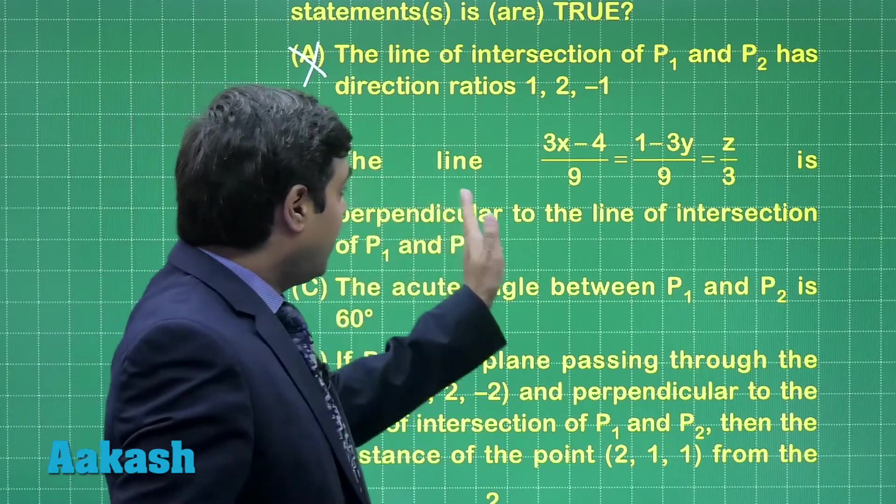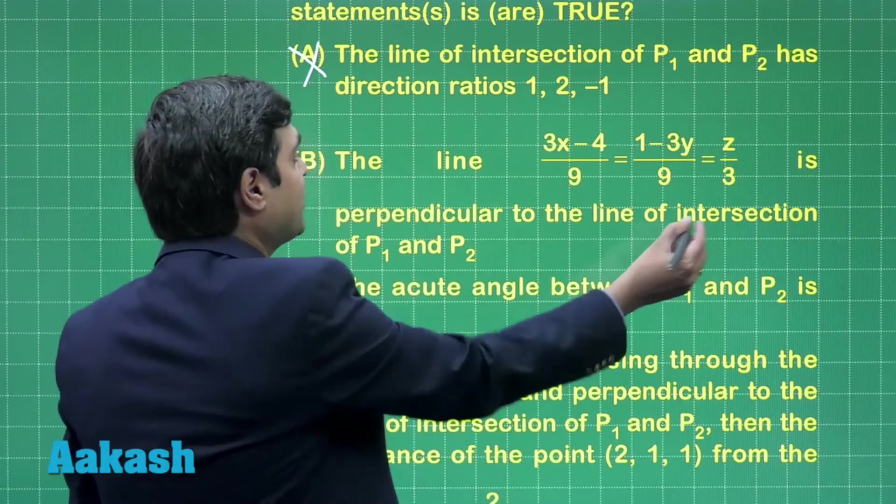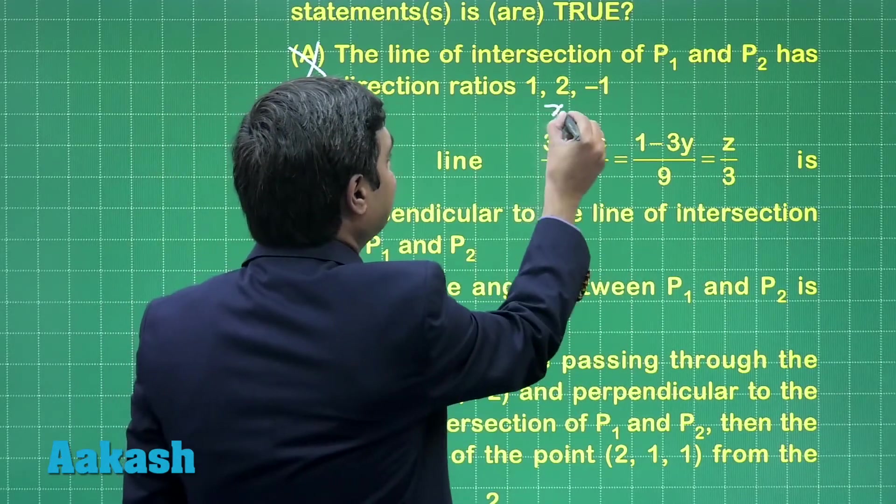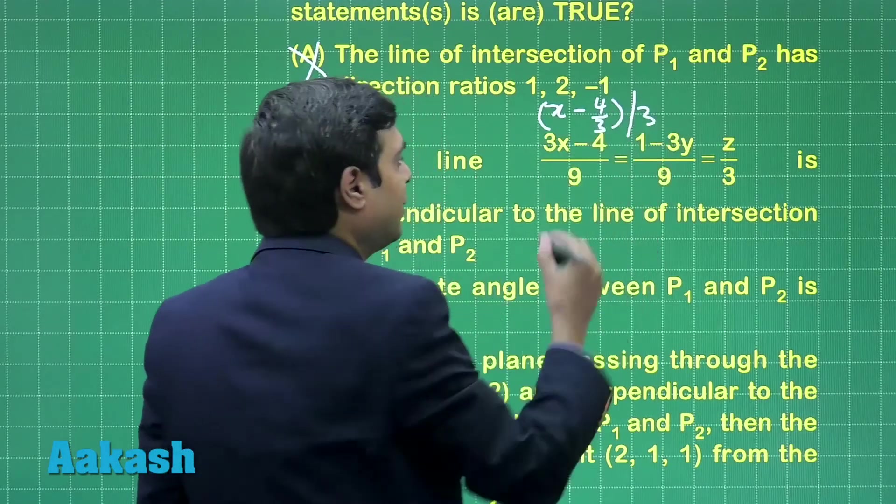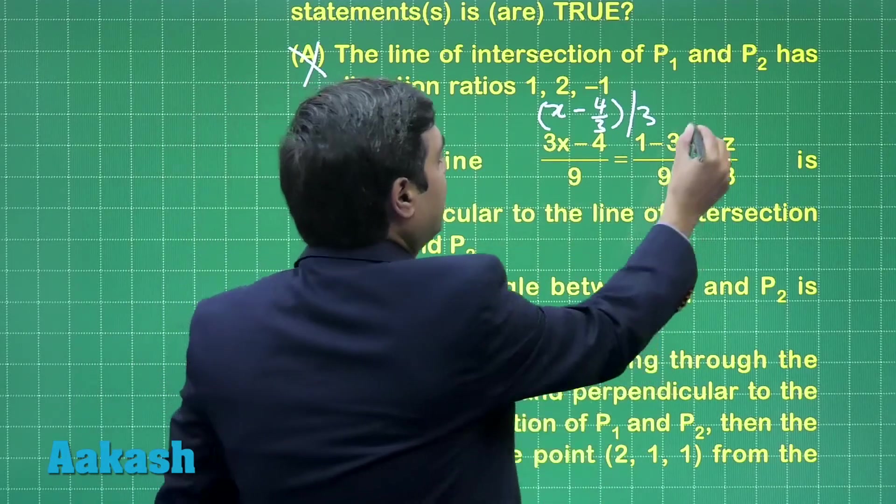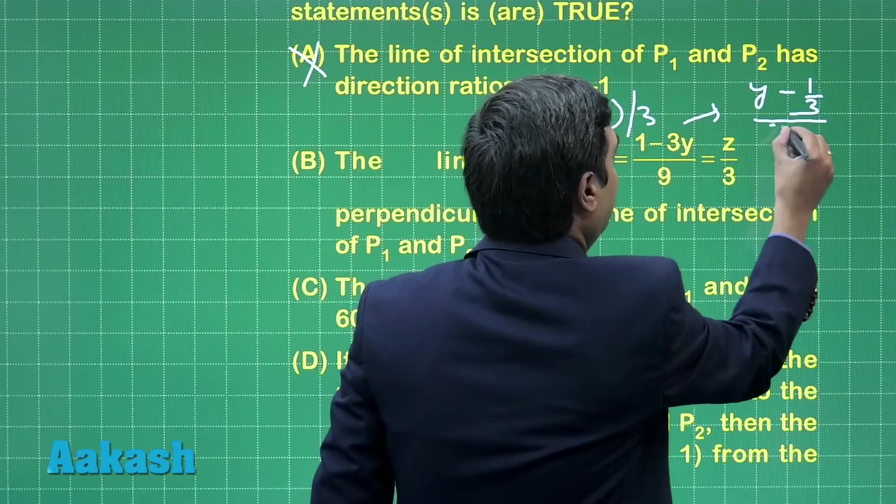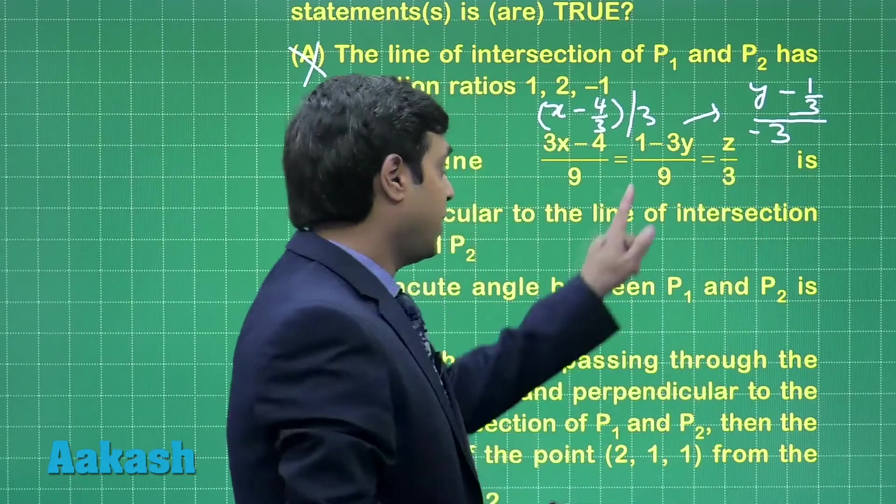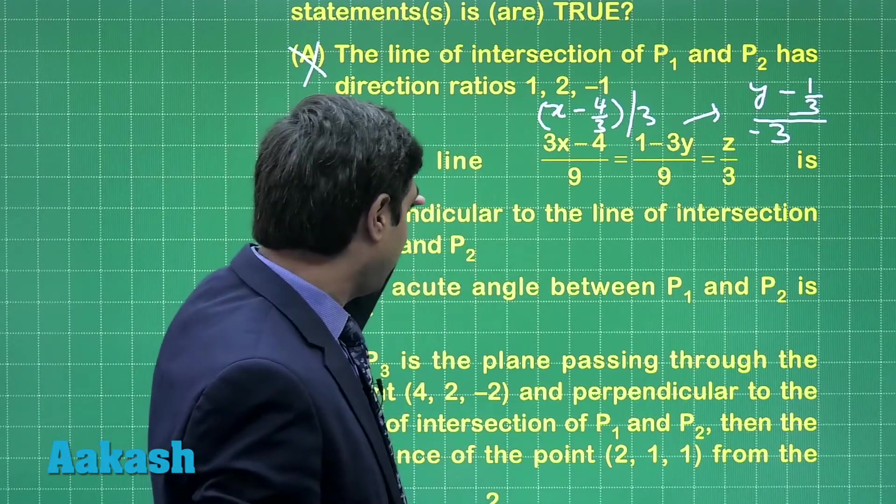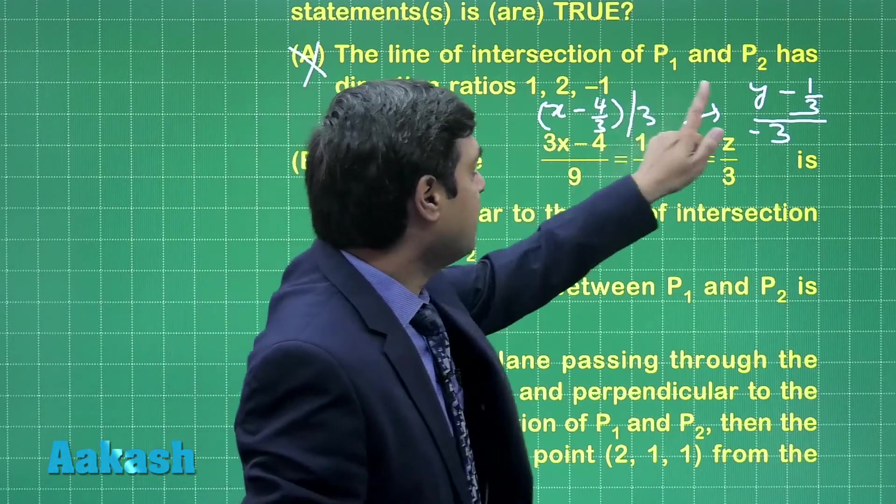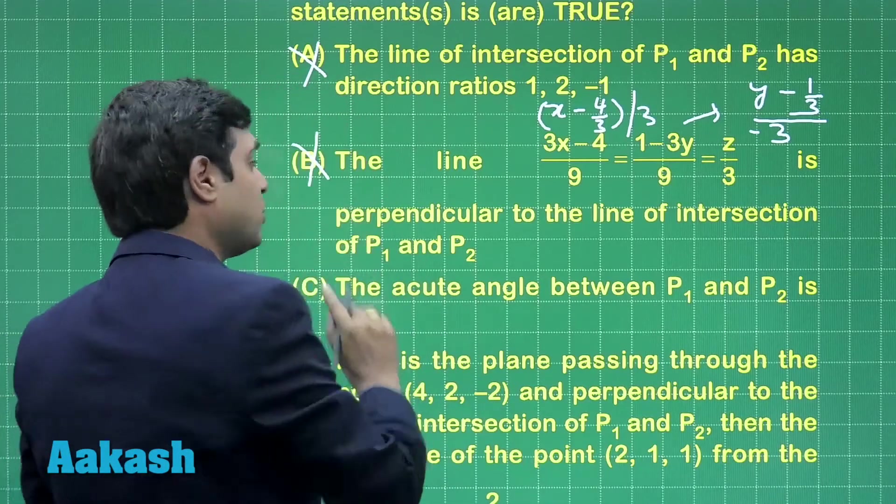Second, the line this one is perpendicular to the line of intersection of P1 and P2. First convert this line into the standard form: the first term is (x minus 4/3) divided by 3, taking 3 common. Second term this one can be written as (y minus 1/3) divided by 3 with negative sign because we have taken minus also common. Now, we see here the direction ratios of the given line are 3, minus 3, 3, which means the two lines are parallel. So option B is also wrong.